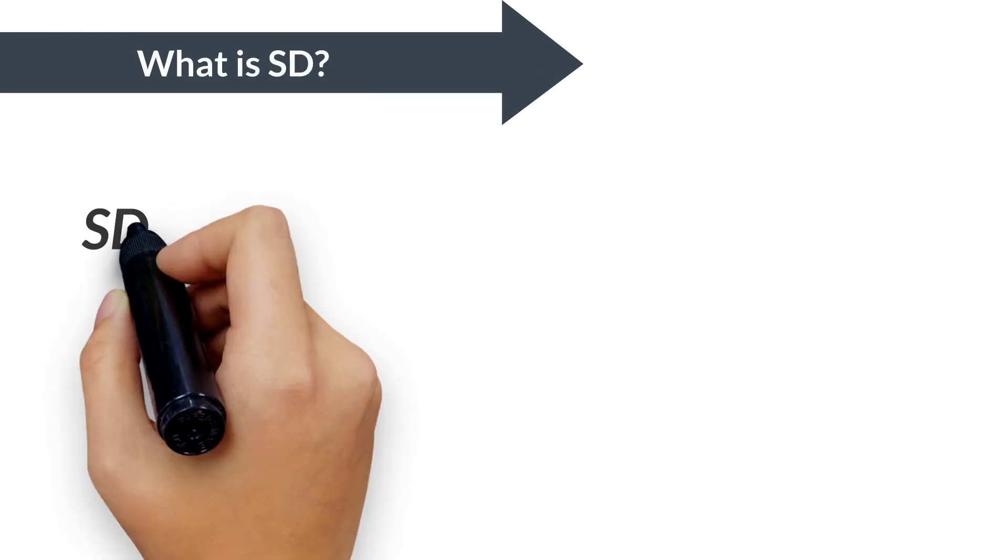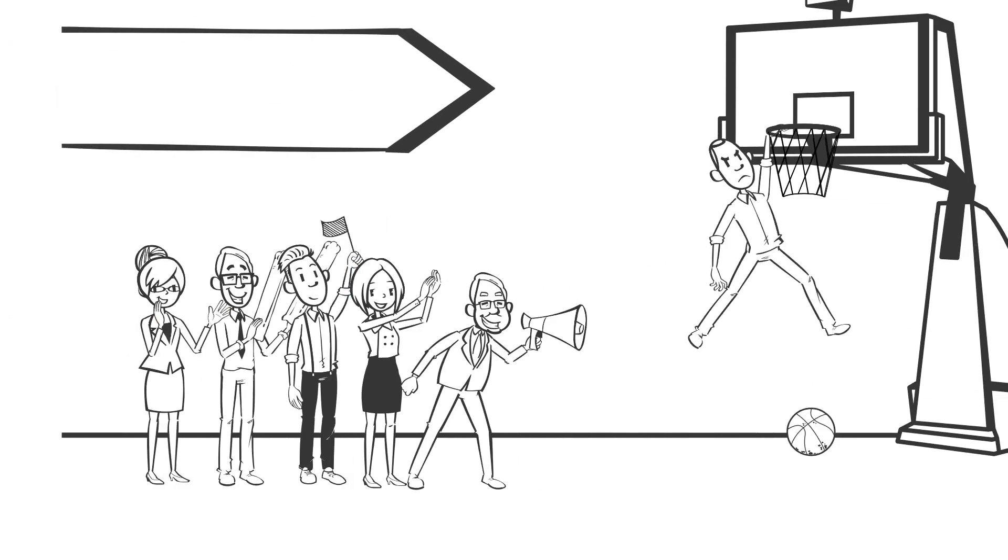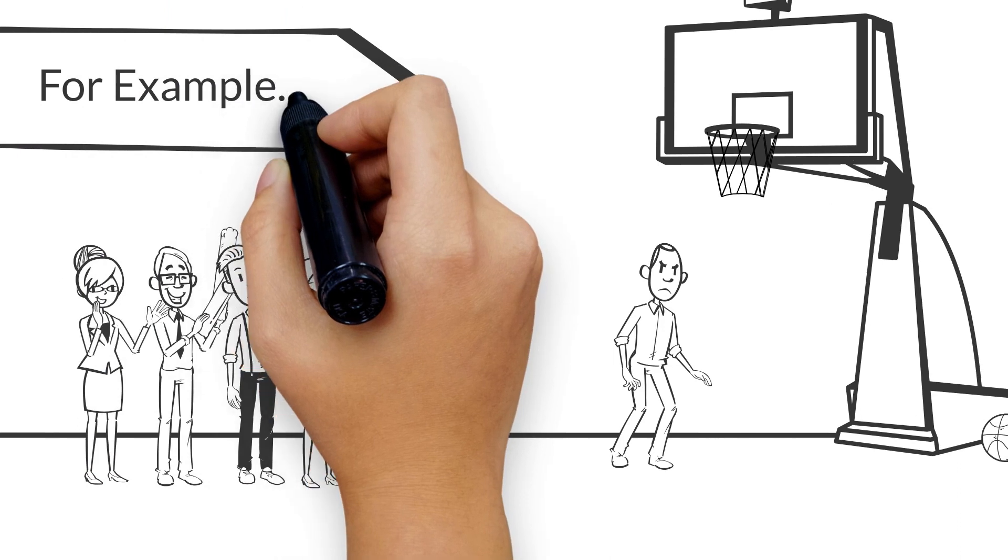First, let's discuss what standard deviation is. Standard deviation shows how much each data point deviates from the average. For example, let's consider the heights of a basketball team.